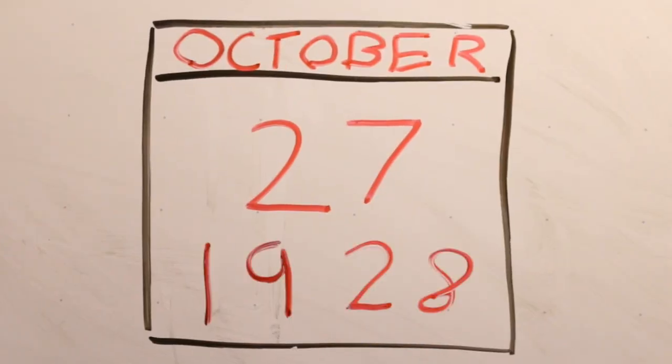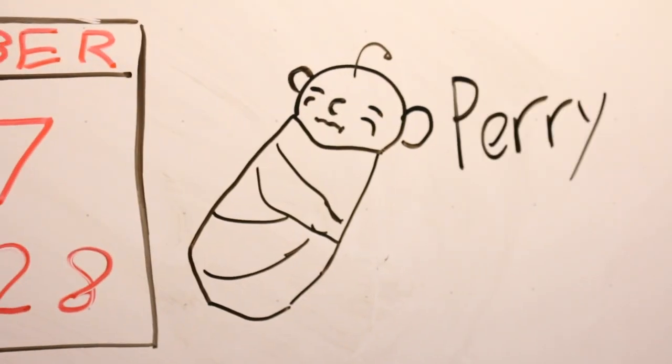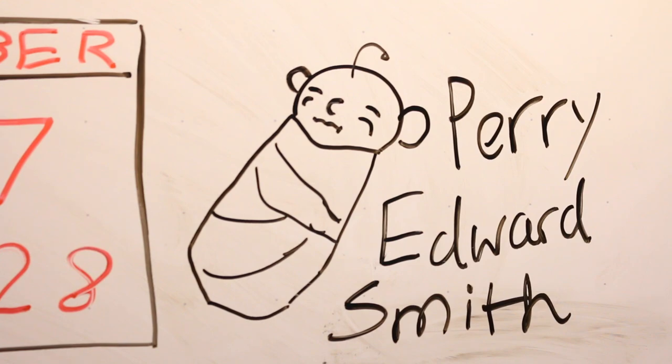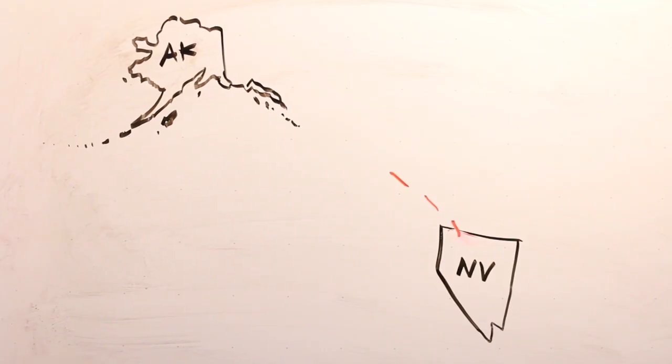On October 27th, 1928, I was born Perry Edward Smith in Huntington, Elko County, Nevada. A year later, my family moved to Juneau, Alaska.